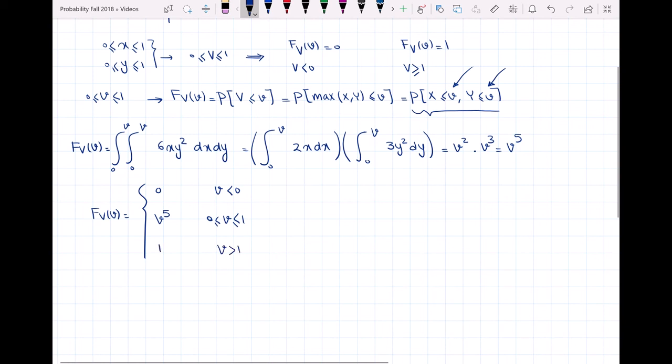Now, how can I find the PDF? The PDF of V equals the derivative of the CDF with respect to v. This gives us 5v to the fourth when v is between 0 and 1, and 0 otherwise.